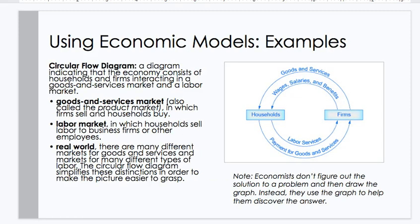Using economic models. Here's an example. Circular flow diagram: a diagram indicating that the economy consists of households and firms interacting in a goods and service market and a labor market. The goods and services market, also called the product market, in which firms sell and households buy. Labor market, in which households sell their labor to business firms or other employees. Real world: there are many different markets for goods and services and markets for many different types of labor. The circular flow diagram simplifies these distinctions in order to make the picture easier to grasp. Note, economists don't figure out the solution to a problem and then draw the graph. Instead, they use the graph to help discover the answer.